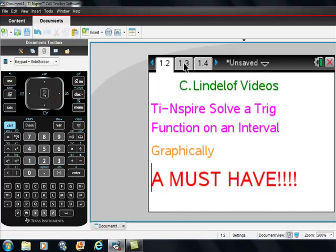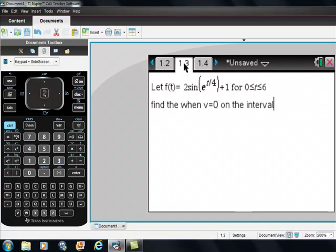What if we're given like a particle motion question and we're given a velocity function that looks like f(t) is equal to 2 sine of e to the t/4 power plus 1 for t is greater than or equal to 0 but less than or equal to 6, and we're asked to find the zeros on that specific interval. Well, the problem with that is this, and I just want to show it to you.